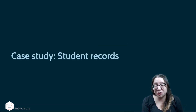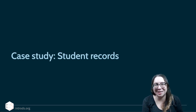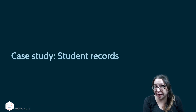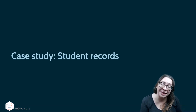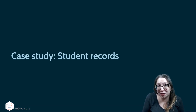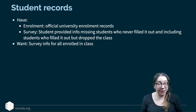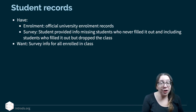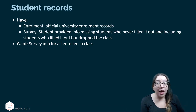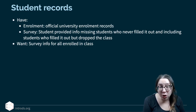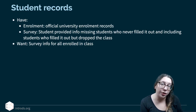Two short case studies illustrate other real-world join scenarios. The first is from teaching: at the start of each semester, official enrollment records and a self-reported 'getting to know you' survey need to be matched. The survey may be missing students who never filled it out, and may include students who have since dropped the course. The goal is to get survey information for all currently enrolled students.